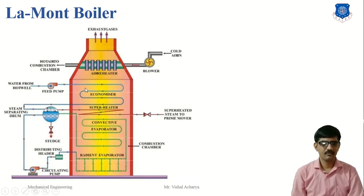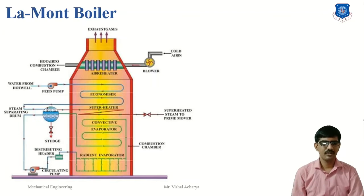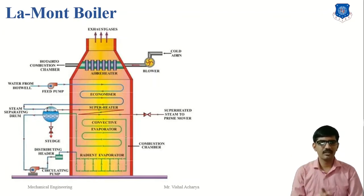In the Lamont boiler working: first, the feed pump circulates water into the economizer, where the temperature of the water increases slightly. The water is then transferred to the steam separating drum. From the steam separating drum, water is circulated to the radiant evaporator using a centrifugal pump, providing forced circulation so the pressure inside the tube is higher compared to natural circulation.